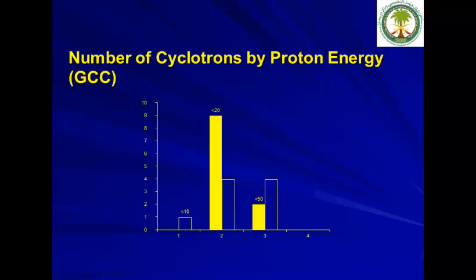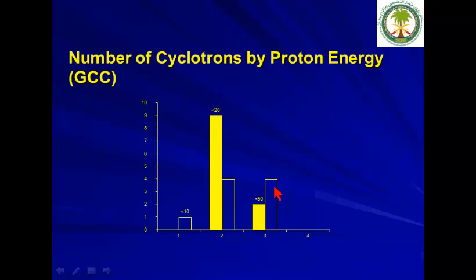Looking at the distribution of cyclotrons in GCC countries: currently we have 9 cyclotrons less than 20 MeV and 2 cyclotrons less than 50 MeV — both in Saudi Arabia. In the future, there will be 1 cyclotron less than 10 MeV, 4 cyclotrons less than 20 MeV, and 4 more cyclotrons less than 50 MeV, with 2 of those being 24 MeV ACSI units in Saudi Arabia.